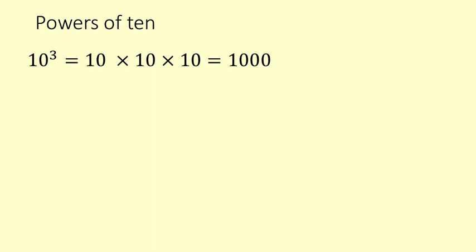Powers of 10 are special because we use a base 10 numbering system, and when you multiply by powers of 10 they look pretty cool. So 10 to the power of 3 is 10 times 10 times 10, which is 1,000.